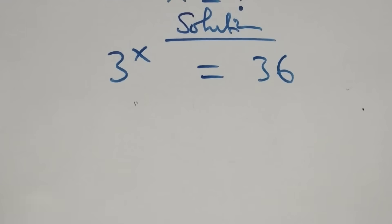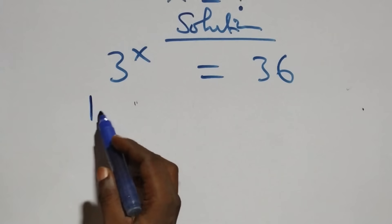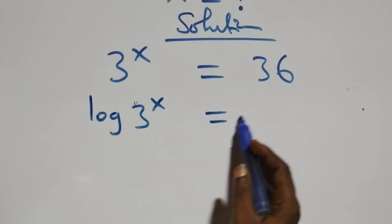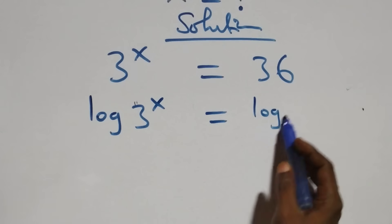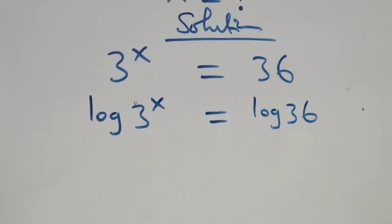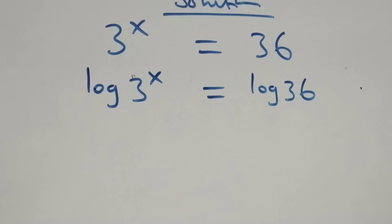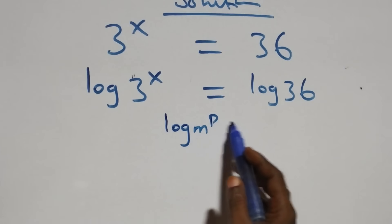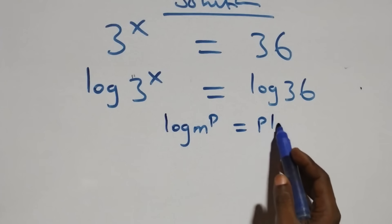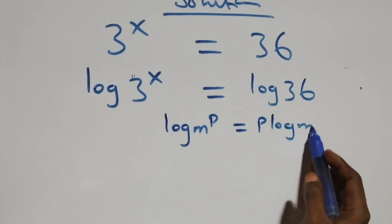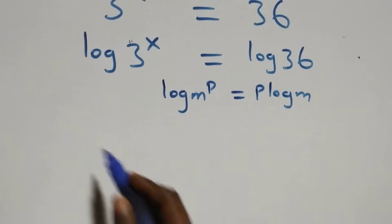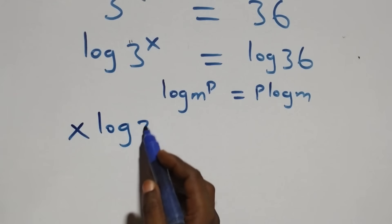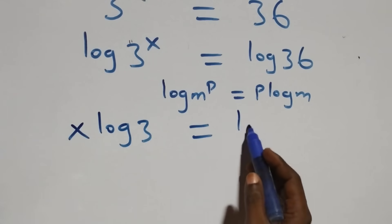We take the log on both sides: log of three raised to power x equals to log 36. Then we apply the power rule of logarithms — log m raised to power p is the same as p log m — so we have x log 3 equals to log 36.